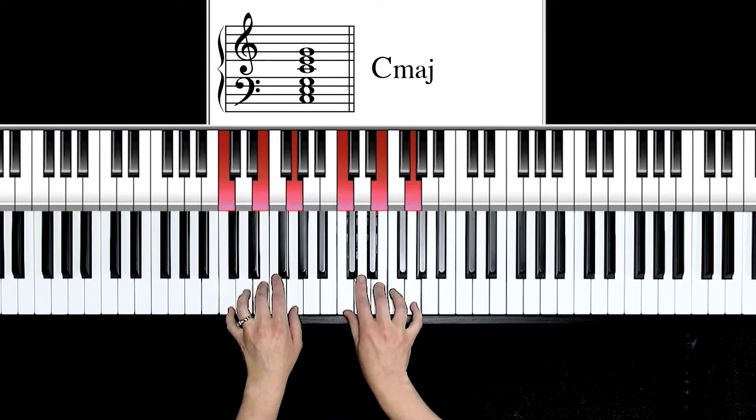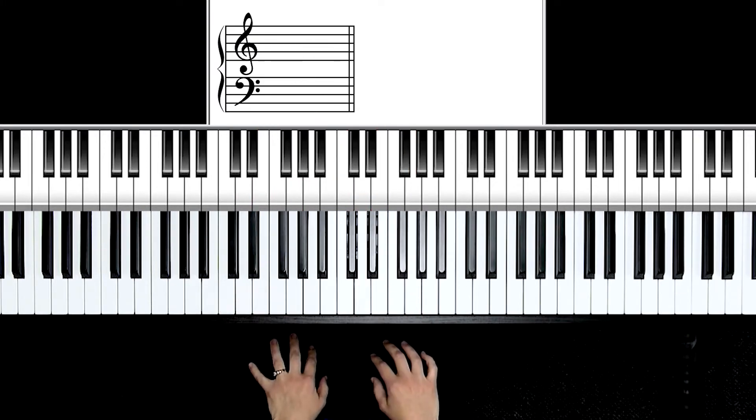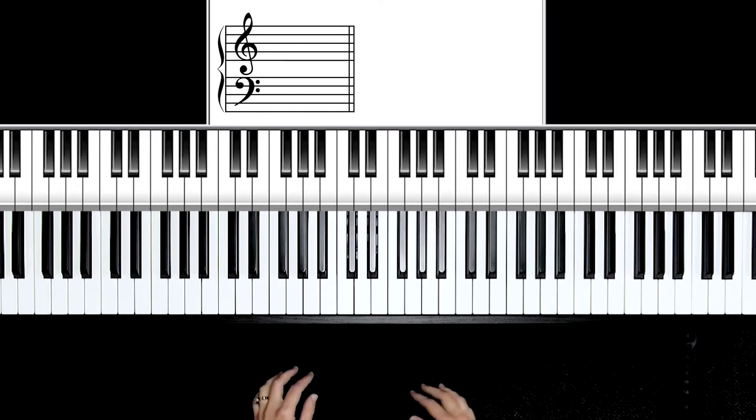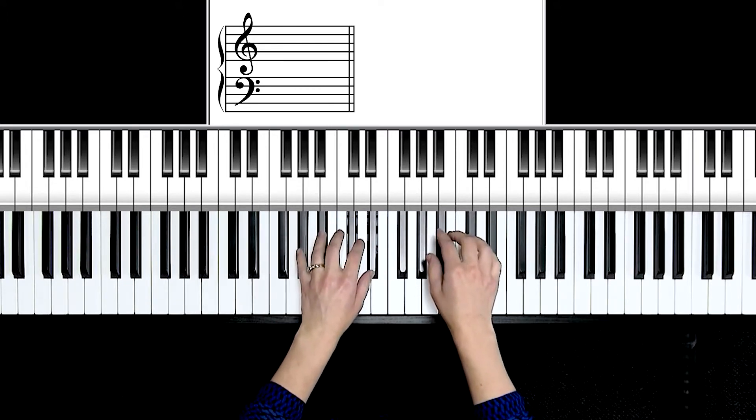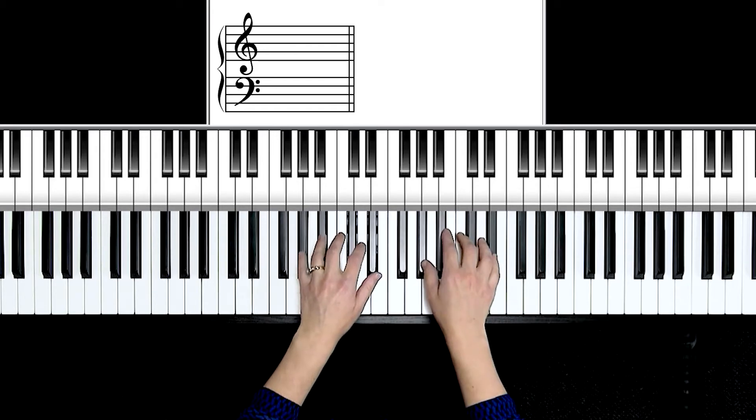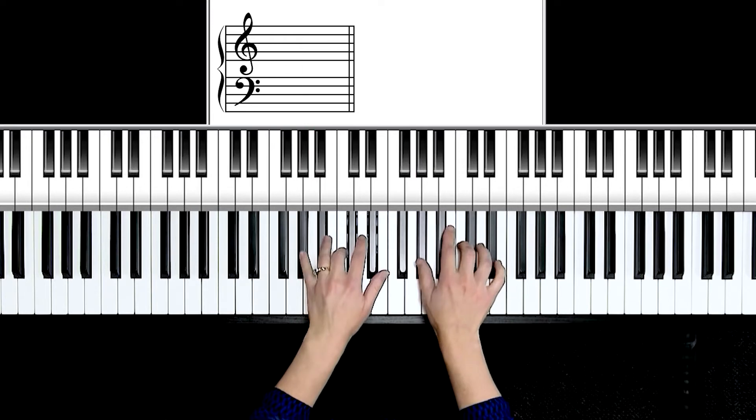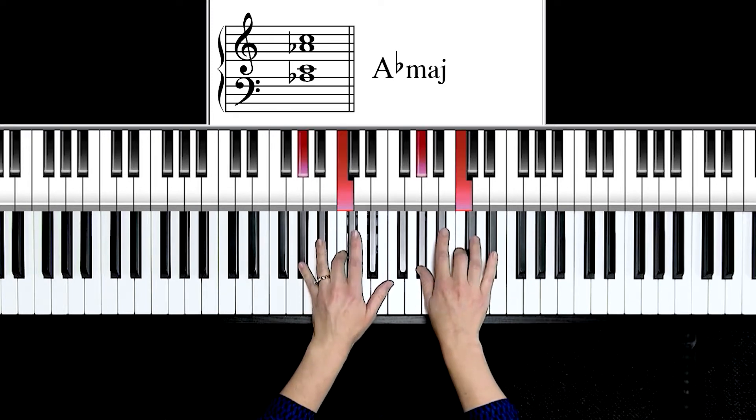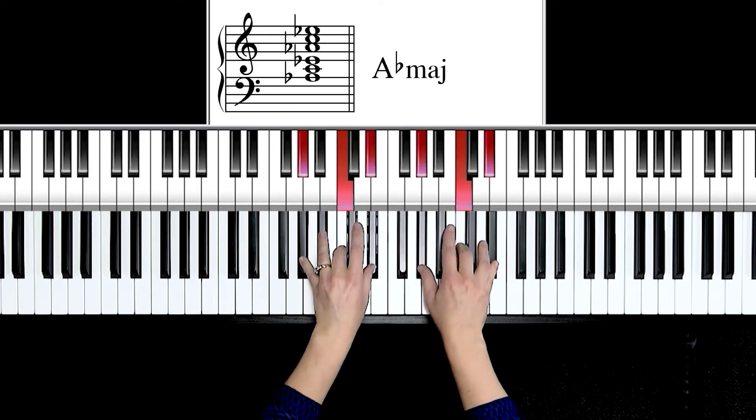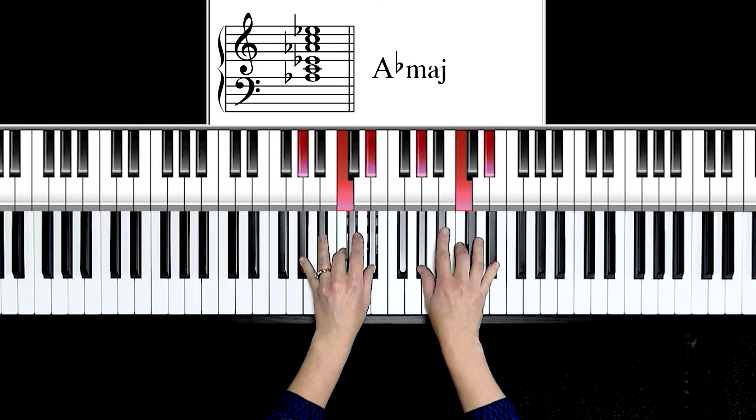You can use this concept to transfer it to any starting root. Let's say you forget how to play in the key of A flat major. Start with A flat as your root, four half steps, one, two, three, four. And I'm on C, three half steps, one, two, three. And you've just built an A flat major triad.